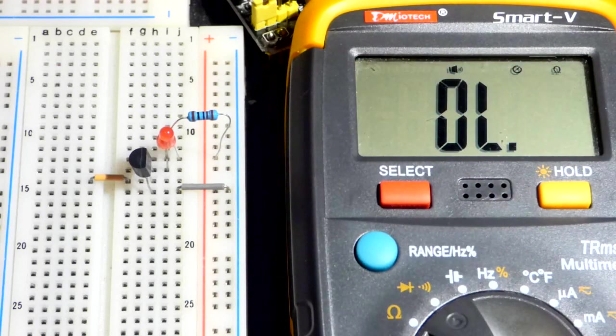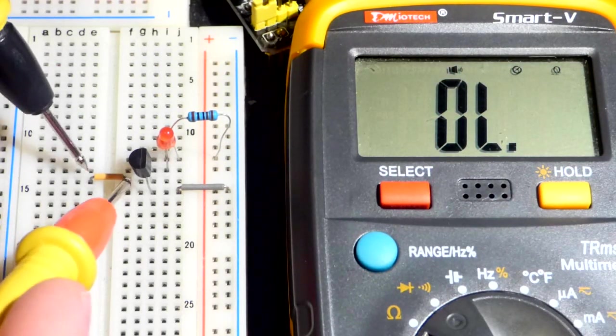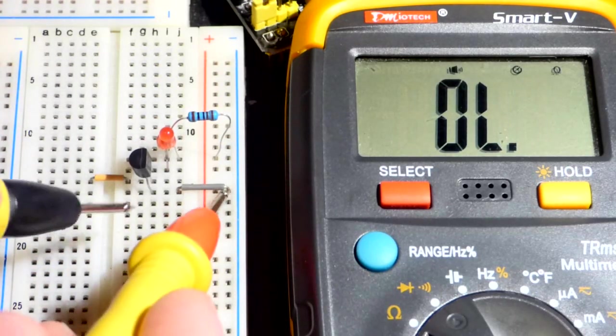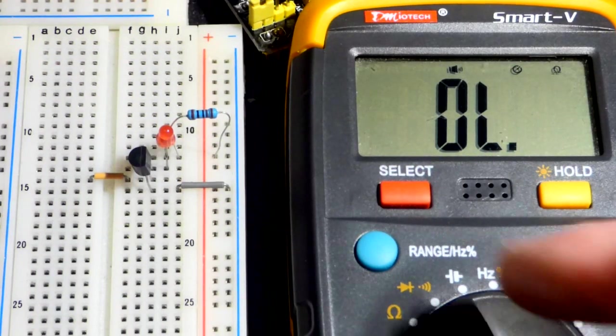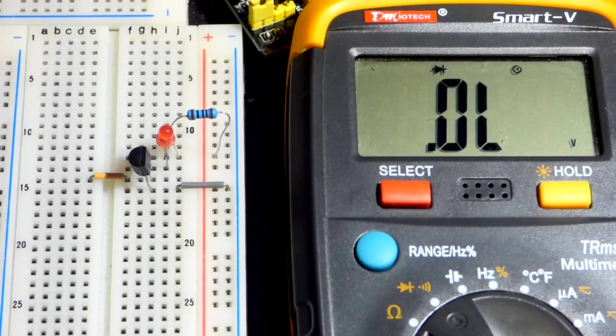And so, now it's measuring continuity. So, if we go to two ends here, it beeps. That's because it's highly conductive. And if it has a little resistance, it would show up. But that's not where we're looking at. We're looking at diode now.